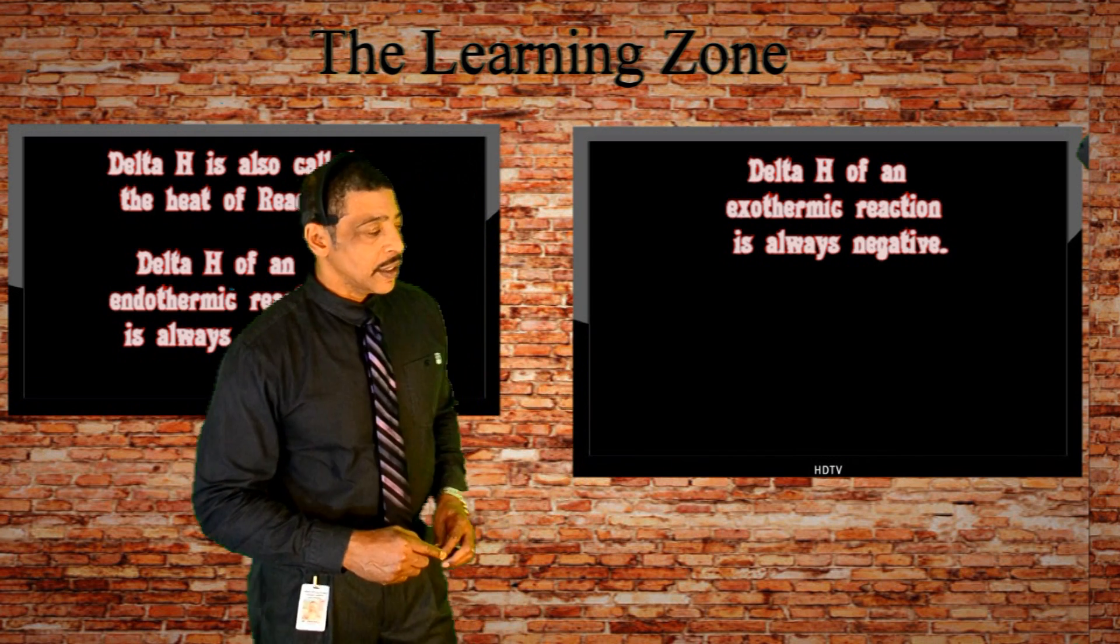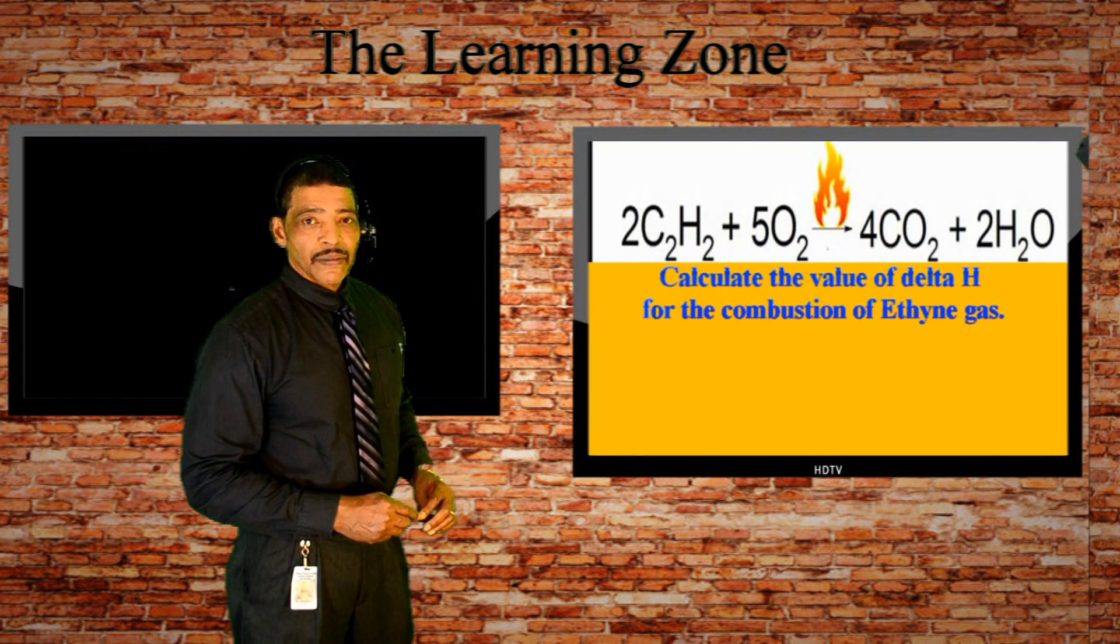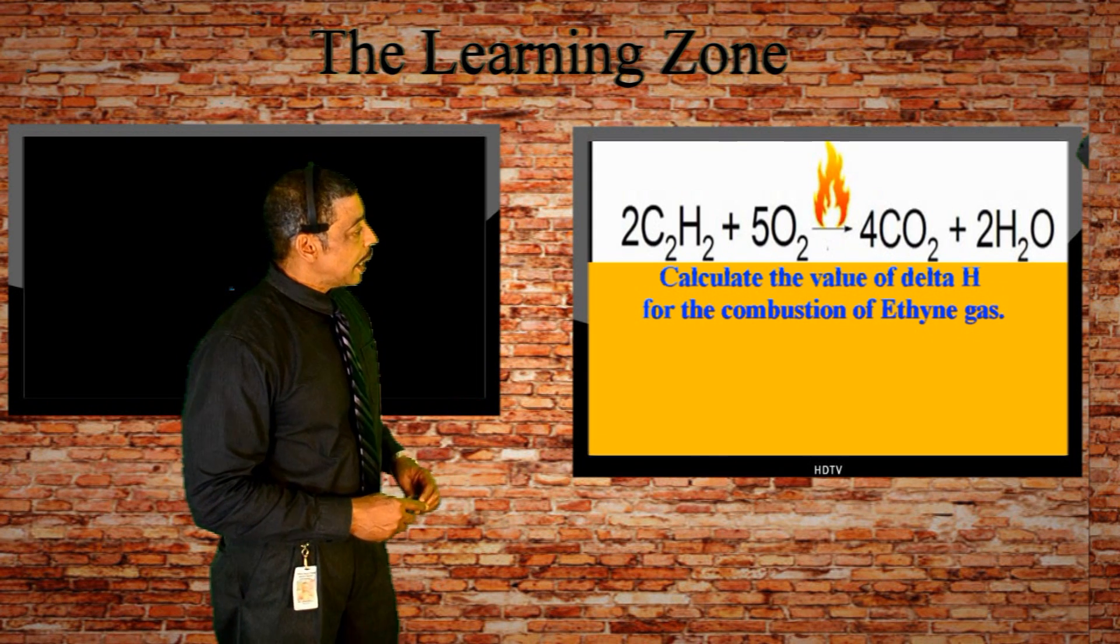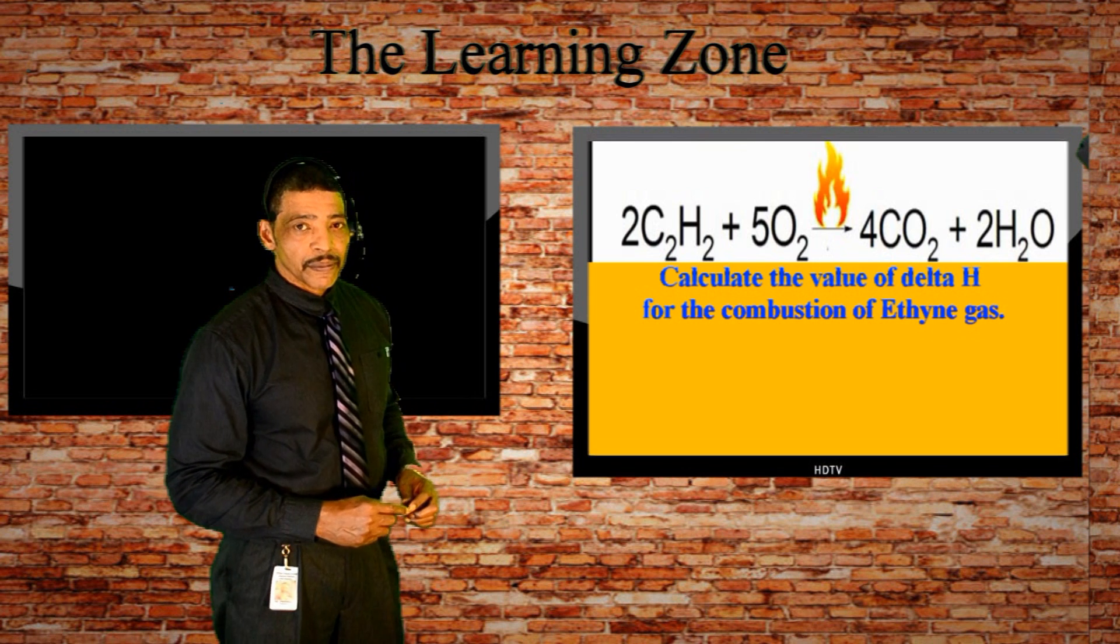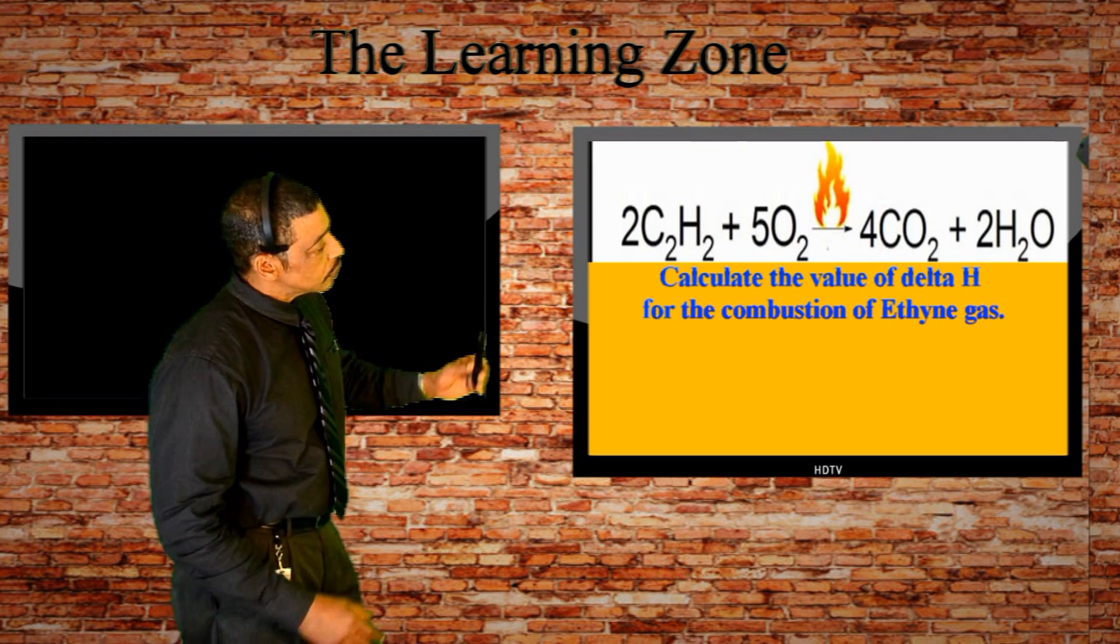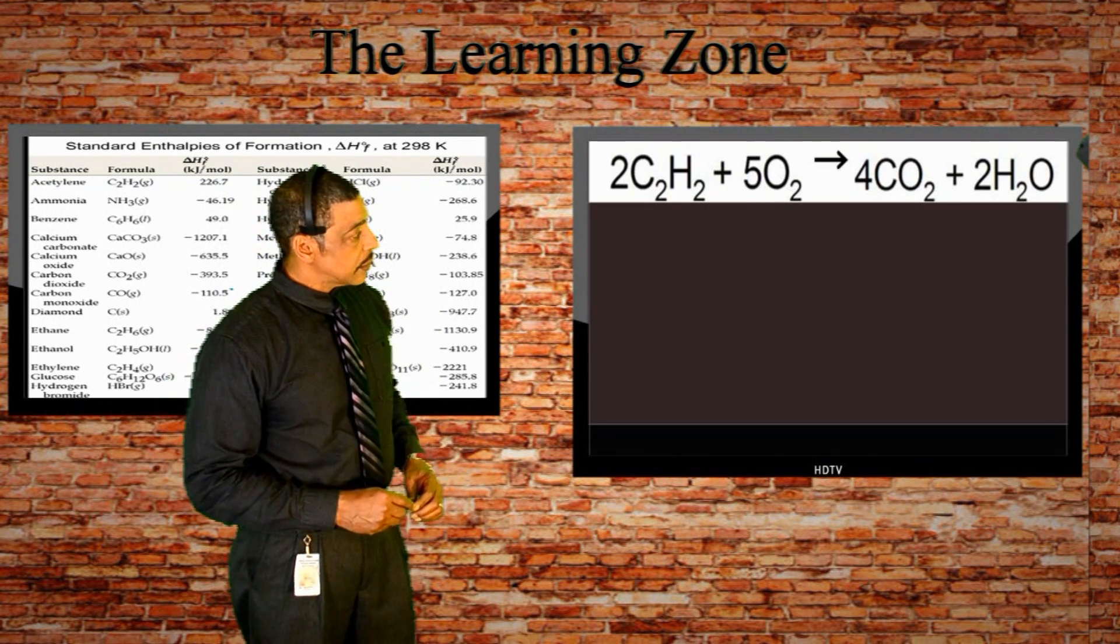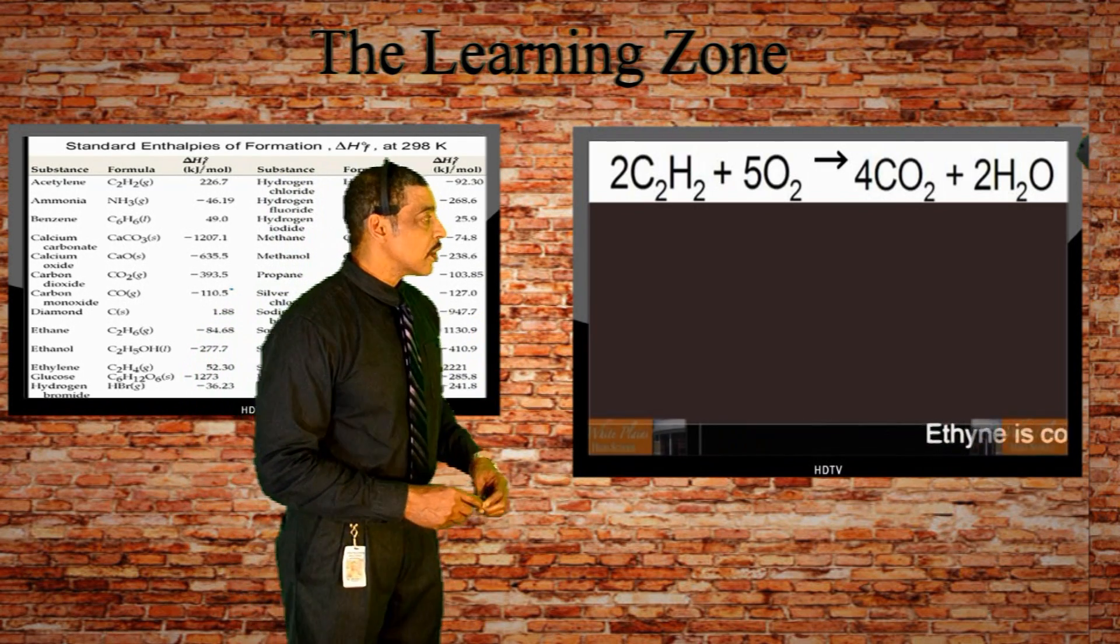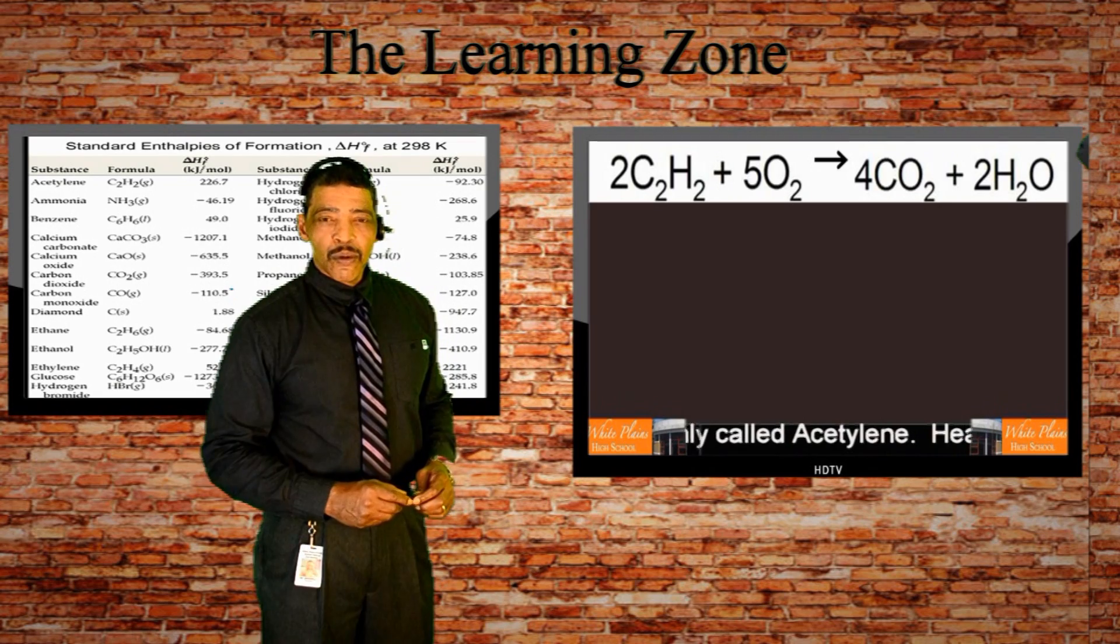Consider the following example where we are asked to calculate the delta H of a reaction where ethyne reacts with oxygen to produce carbon dioxide and water. The stoichiometry of the process is written as follows: 2 moles of ethyne reacts with 5 moles of oxygen gas to produce 4 moles of carbon dioxide gas and 2 moles of water vapor.